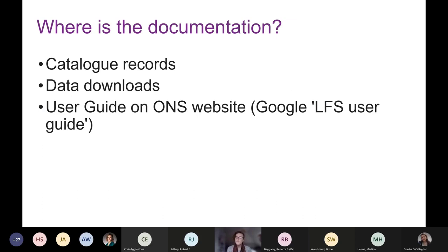You can access the documentation in a number of different places. First, you can find it on the catalogue pages under the documentation tab, where you'll find a list of all the documentation and can click to download it. When you download the data, you'll also receive copies of all the documentation within the zip file. You can also find the user guide on the ONS website — it comes up best if you search 'LFS user guide' in a search engine.